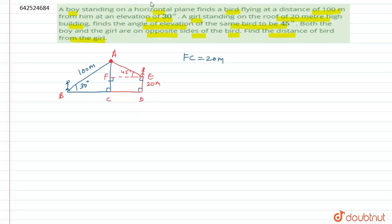So now what we have to find? We have to find the distance of the bird from the girl, that means we have to find this distance, that will be equal to AE. So AE needs to be found. So first of all let us take triangle ABC, and here we can apply sine 30 degrees. Sine theta is equal to perpendicular upon hypotenuse.